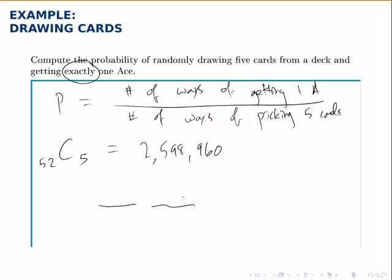The number of ways of getting an ace when we draw a card. Well, there are four aces to choose from and we're selecting one of them. So then, the number of ways to select a card that isn't an ace.